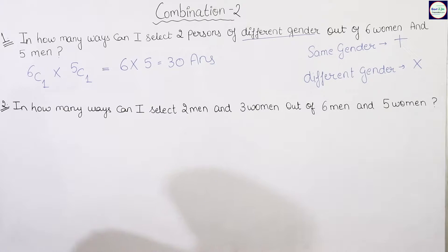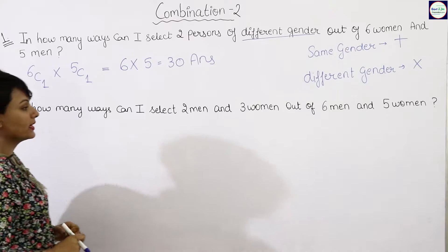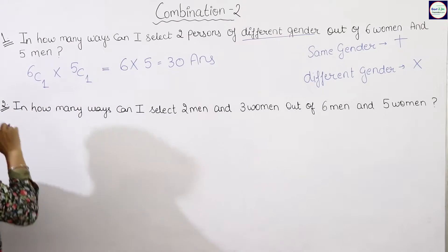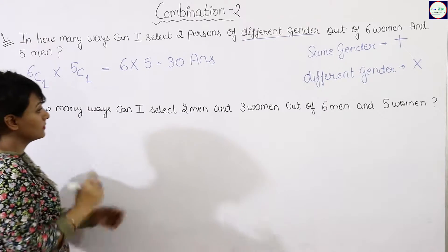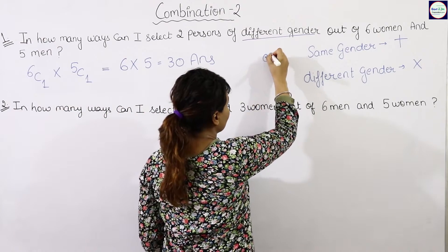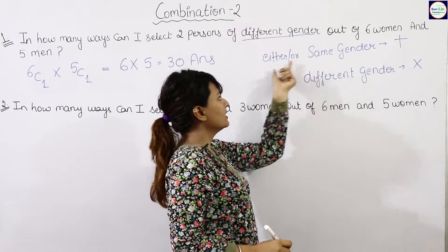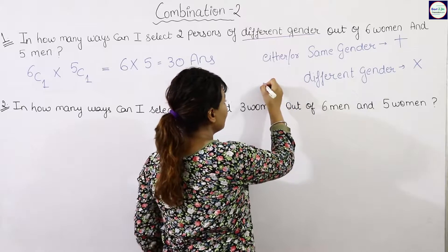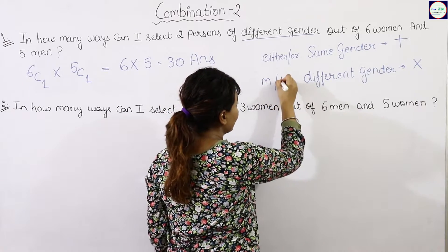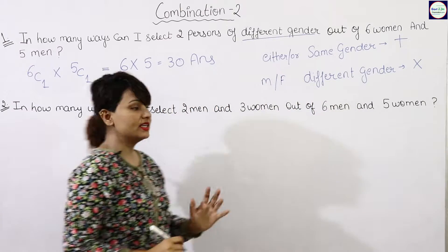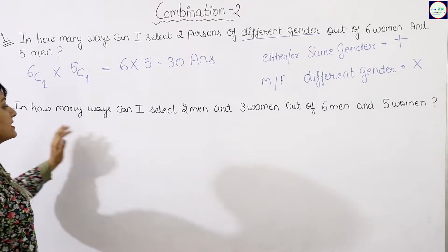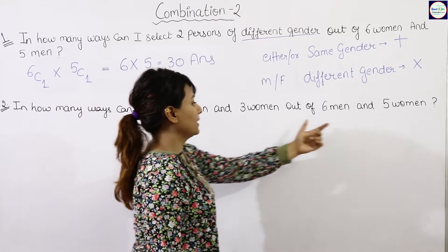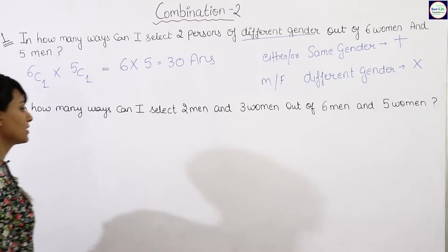Question number two: in how many ways can I select two men and three women out of six men and five women? This is the case of different gender — two men out of six men, and three women out of five women.